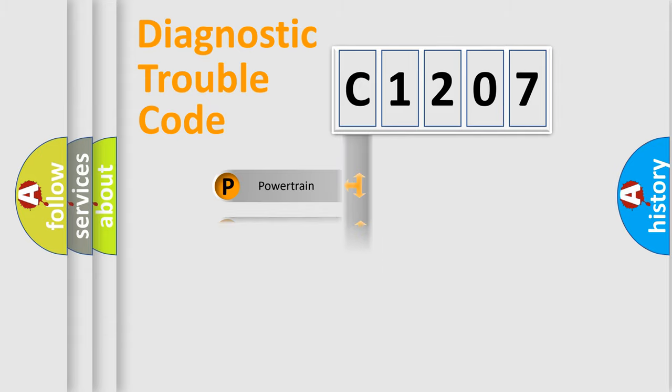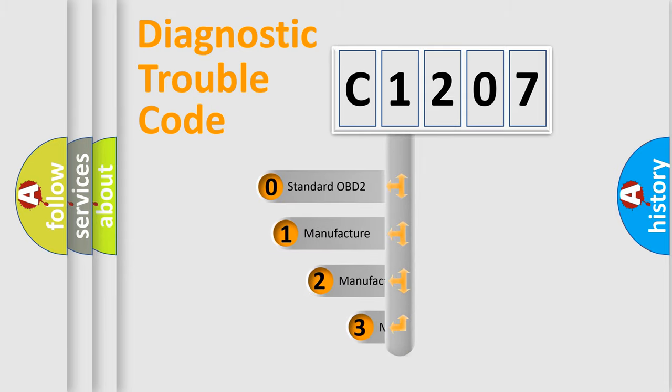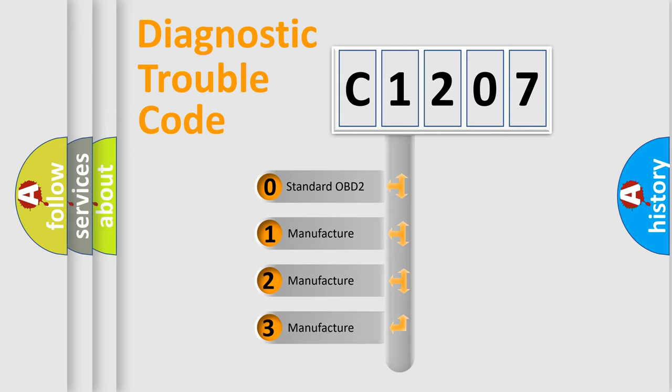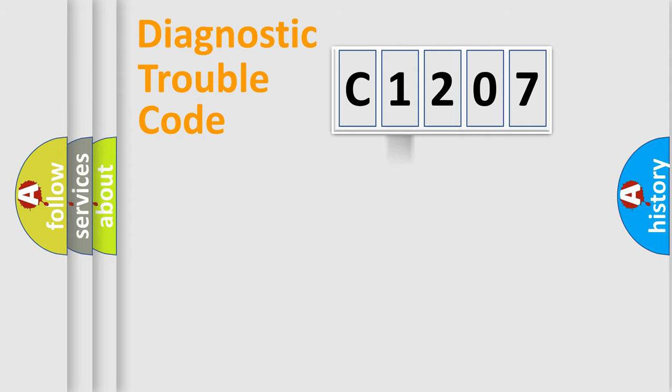Powertrain, Body, Chassis, Network. This distribution is defined in the first character code. If the second character is expressed as zero, it is a standardized error. In the case of numbers 1, 2, 3, it is a more prestigious expression of the car specific error.